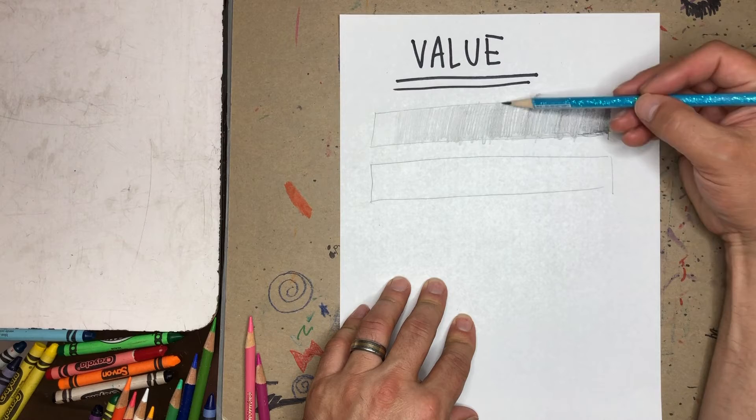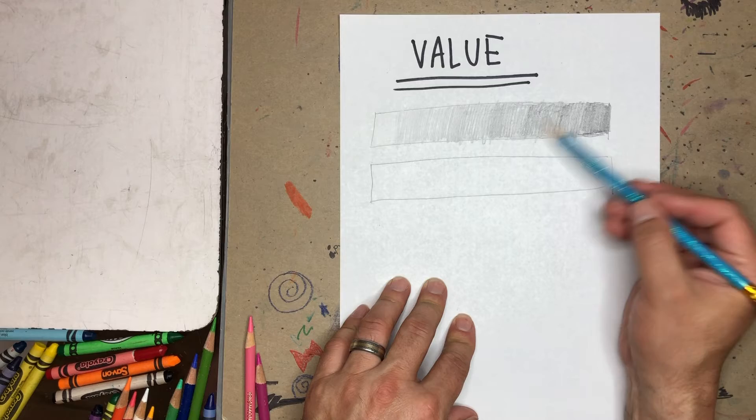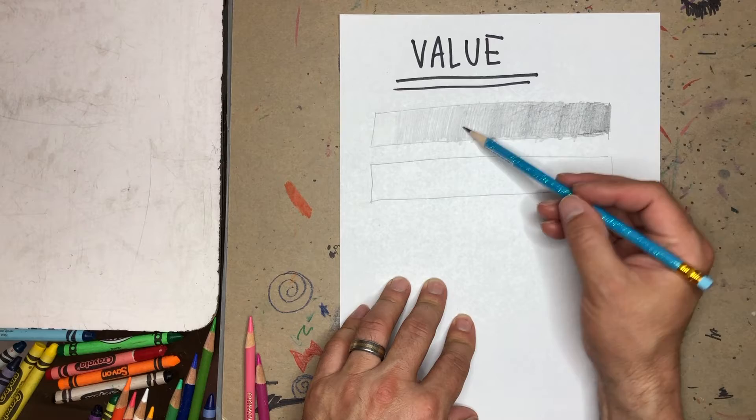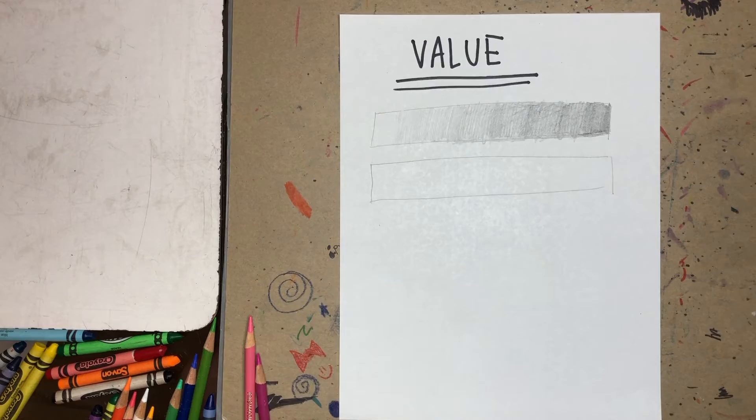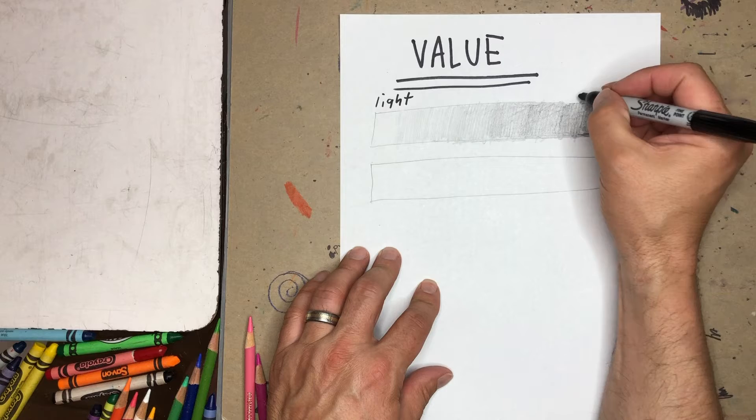And as I said, the pencil is gray is a color, but it can also be done as colors, as you'll see. We can do the same with any color. All right, so now I've got a pretty good going from light to dark in my grayscale.